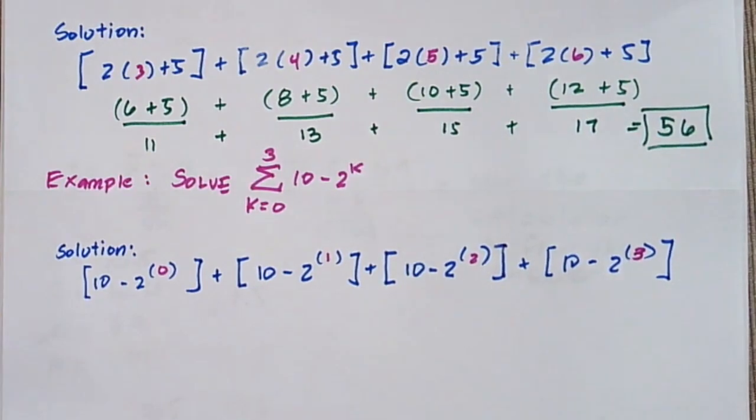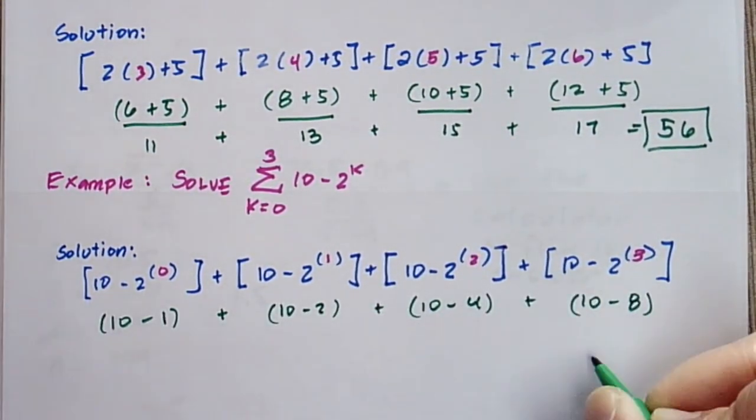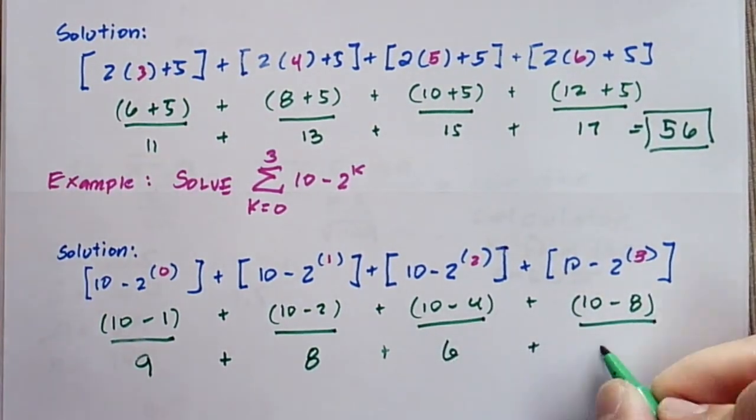We'll have 10 minus 1, 10 minus 2, 10 minus 4, 10 minus 8, and then we're going to add them all up, which is equal to 25.